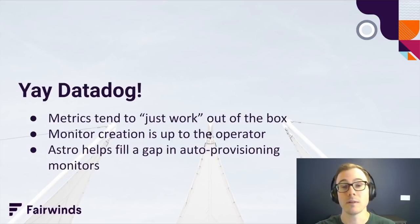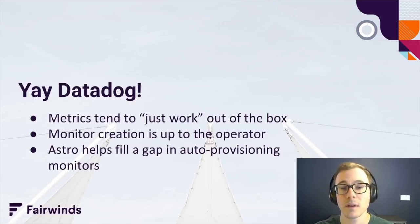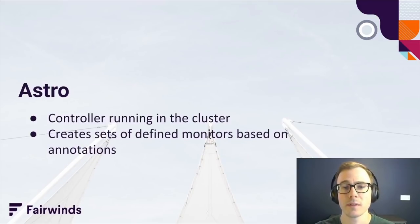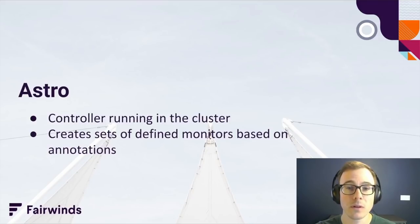Datadog is a wonderful service. It removes a lot of toil from our lives as Kubernetes operators. Most things just work when it comes to metrics gathering after you install the Datadog agent. We built Astro to complement Datadog so that monitoring workloads is automatic in the dynamic world of Kubernetes. Astro is a workload that runs inside your Kubernetes cluster and will create a set of defined monitors based on annotations put on either your workloads or a namespace that contains multiple workloads. Let's take a look at that in action.